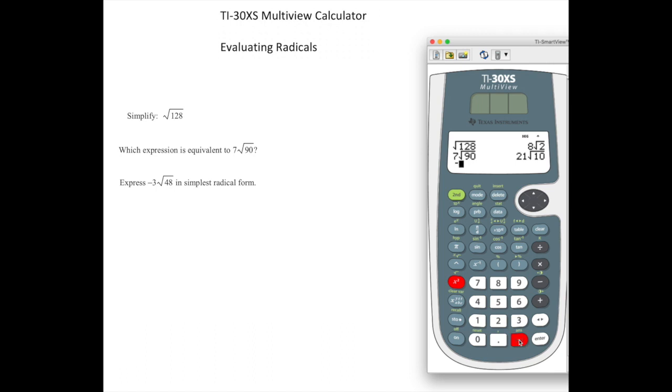Negative. We need a 3. Second function x squared. And then we're going to enter 48. And enter. And there's our answer negative 12 square root 3.